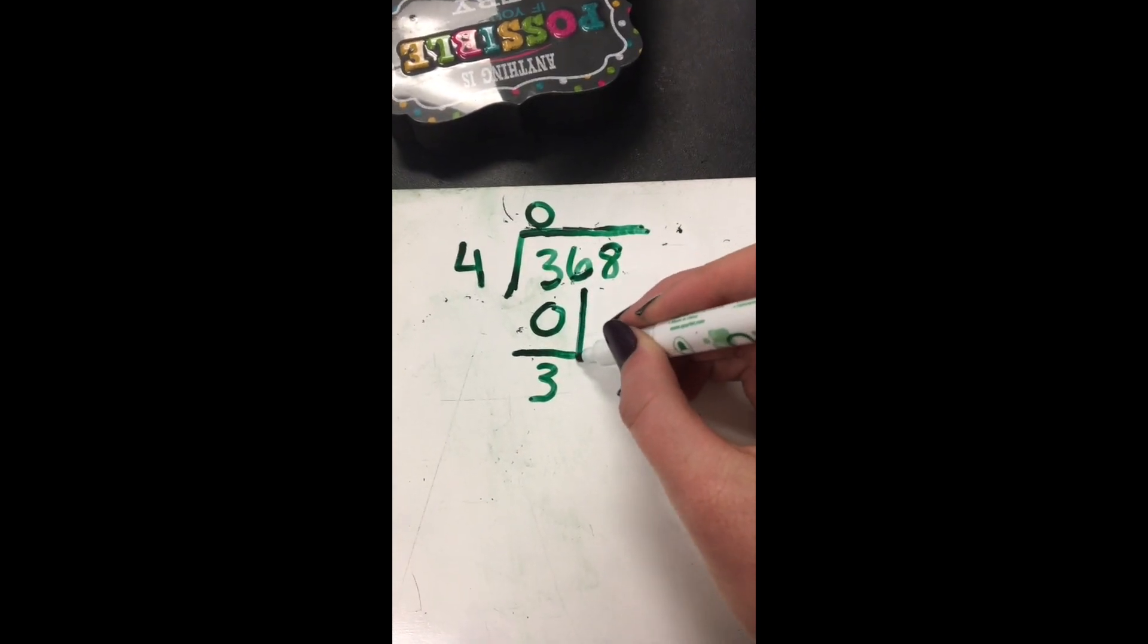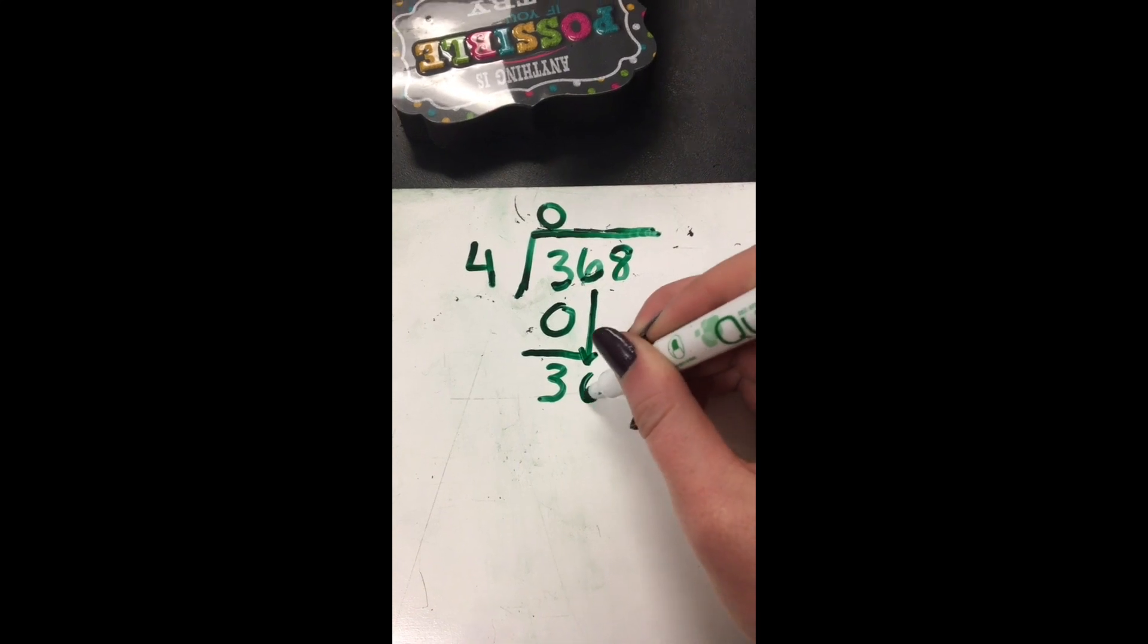The next digit of the dividend goes on down. Put it beside your last answer on the ground. Now stop, collaborate and listen. Look back on your work to see if something is missing.